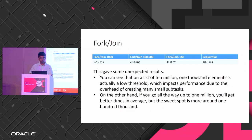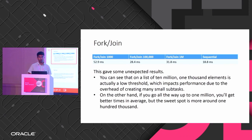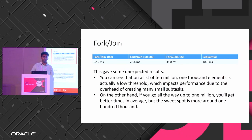I ran this example with a 10-million element list, doing 10 iterations for different thresholds. For a threshold of 1,000 I got 52.9 milliseconds; for 100,000 I got 28.4 milliseconds; and for 1 million I got 31.8 milliseconds.